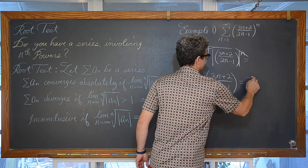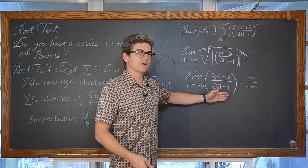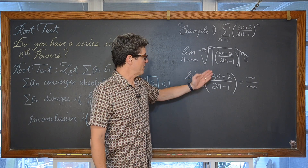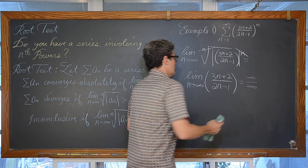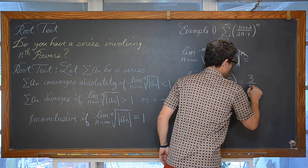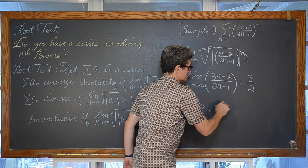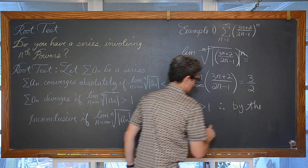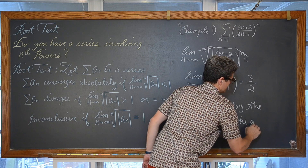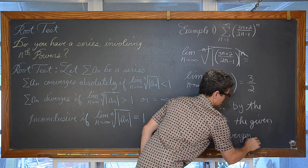Here we are going to have infinity over infinity, but you can divide the numerator and denominator by n, or apply L'Hôpital's rule and take the derivative of the numerator and denominator individually. However you approach this problem, this is a pretty simple limit to analyze. It is going to come out to be 3/2. Now, 3/2 is greater than 1. Therefore, by the root test, the given series diverges.